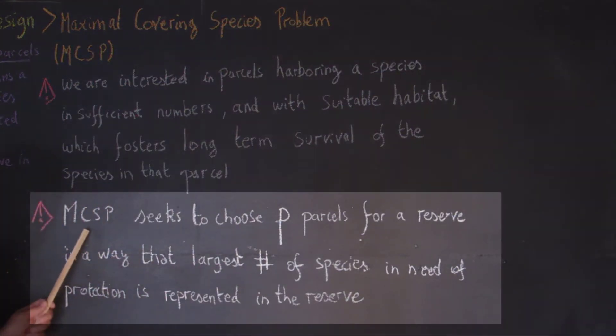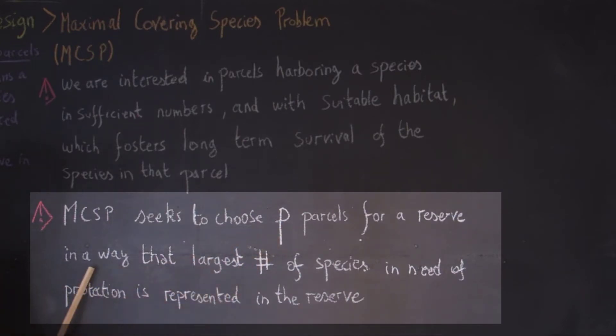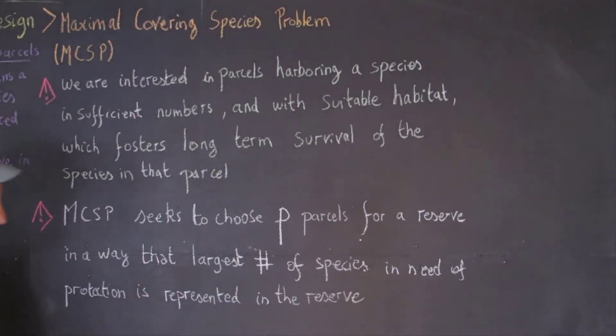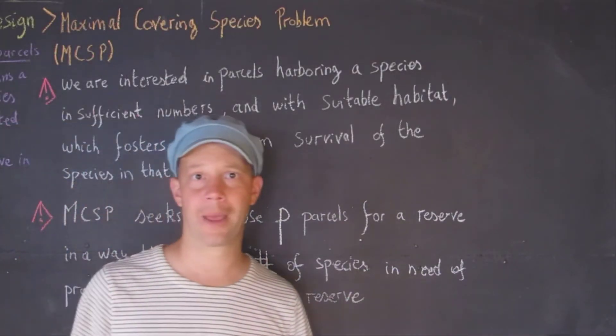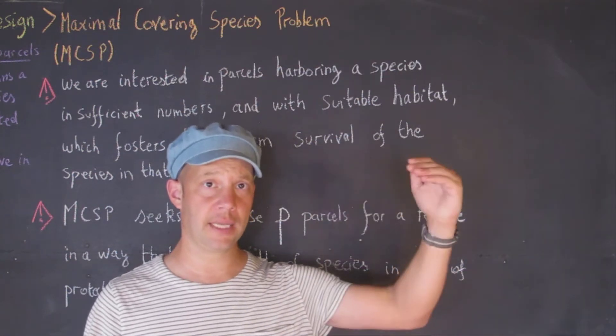Second, the maximum covering species problem seeks to choose P parcels, so P is dictated by the budget, for reserve in a way that the largest number of species in need of protection can be represented in the system. So that's what we're trying to do, maximize the number of species that can be preserved.